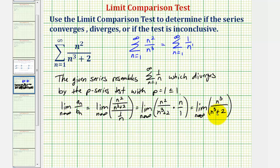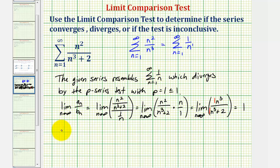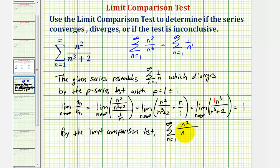Notice that in taking this limit, the degree of the numerator and denominator are the same, and therefore the limit equals the ratio of the leading coefficients, which is one divided by one, or just one. Because this limit is positive and finite, and the comparison series diverges, the given series also diverges. By the limit comparison test, the summation from n equals one to infinity of n squared divided by the quantity n cubed plus two diverges.